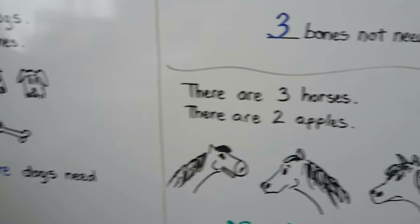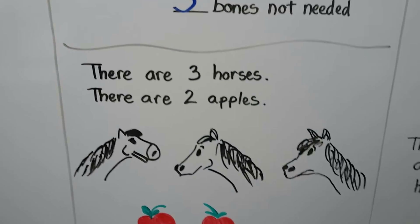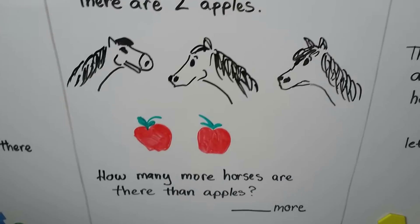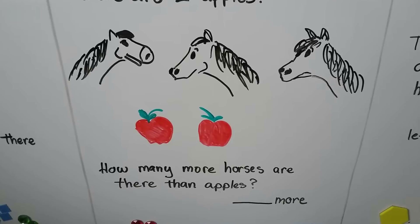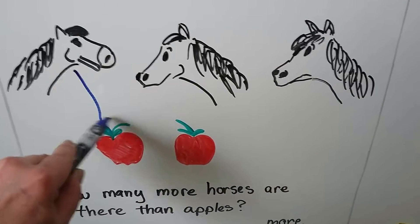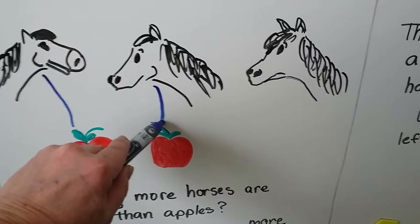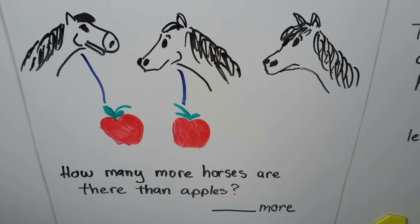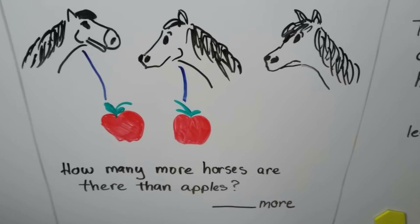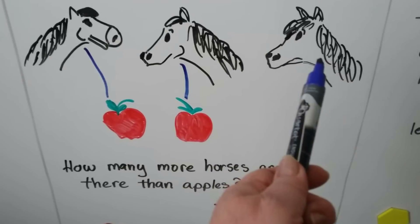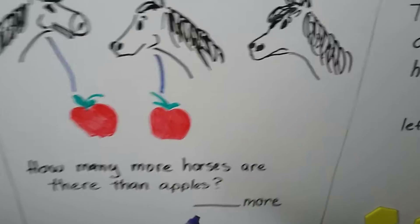Maybe we could give those bones to those dogs. There are three horses. There are two apples. How many more horses are there than apples? This horse can get this apple. This horse can have that apple. That poor horse doesn't get an apple. How many more horses are there than apples? There's one more horse.